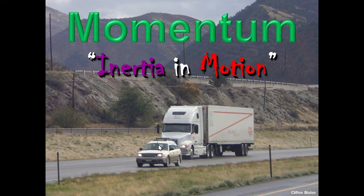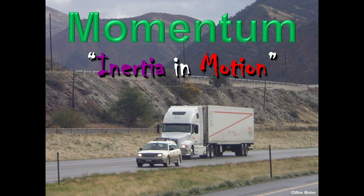Let's look at this car and the semi-truck to identify what variables affect momentum. If this car has the same velocity as the truck, you might guess that the truck has a whole lot more momentum. So what variable is that? It's going to be mass. The more mass it has, the more inertia it has, the more momentum it has.